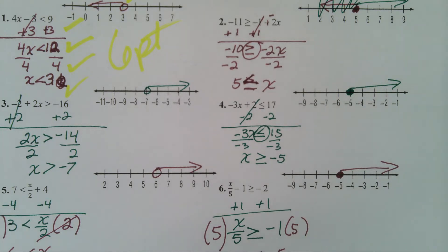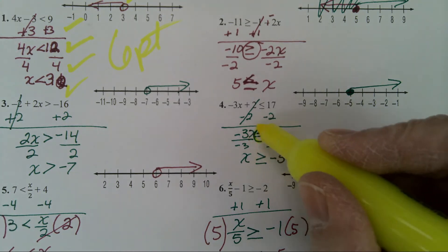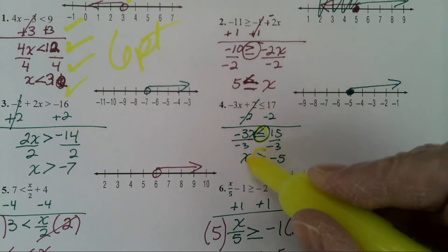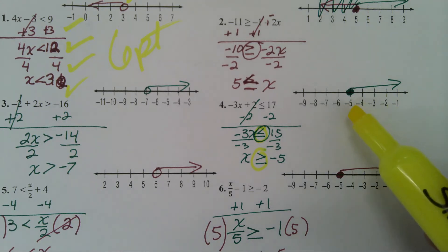You now have negative 3x is less than or equal to 15. You are going to divide both sides by a negative number. That causes your inequality sign to flip. You end up with the answer x is greater than or equal to negative 5. Closed circle going to the right.